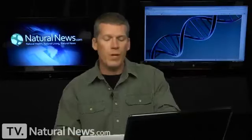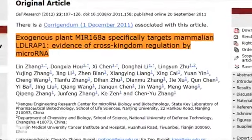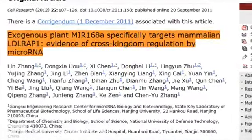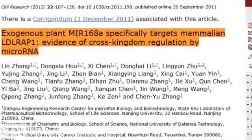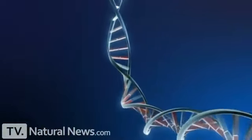But now here in Cell Research, we have a new study called Exogenous Plant MIR168A. That is a microRNA study that we're talking about here. Specifically targets mammalian LDLRAP1, that's a receptor for LDL cholesterol function in the liver. Evidence of cross-kingdom regulation by microRNA. It means that microRNA, which is information, it is genetic information, has now been found to pass from the foods through digestion into your blood and then to attach onto your organs.